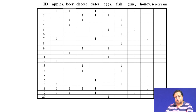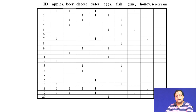In the first row — transaction ID 1 — apple, beer, dates, glue, and honey were bought; the other items were not. In the second transaction, cheese, dates, and eggs were bought. In the third, beer and cheese. Now imagine having thousands of products and millions of customers — creating this matrix for every transaction yields a huge dataset, making it very difficult to run analysis on the whole dataset at once.